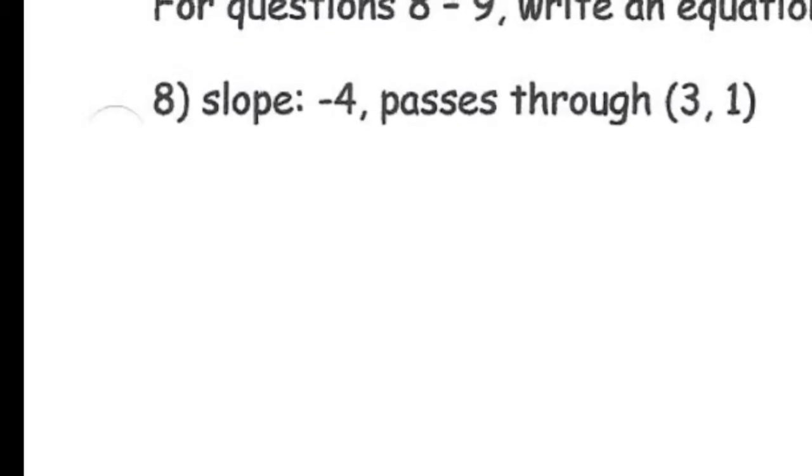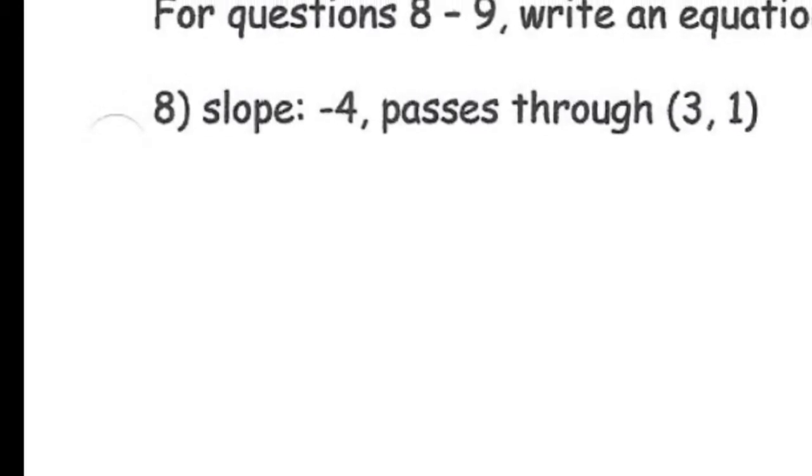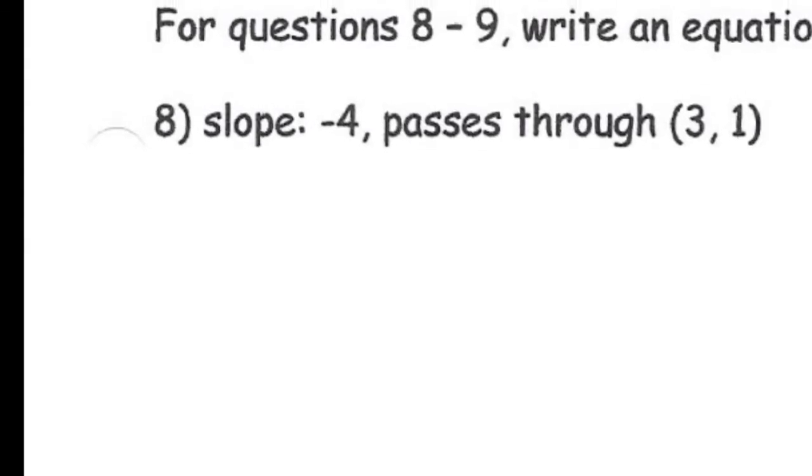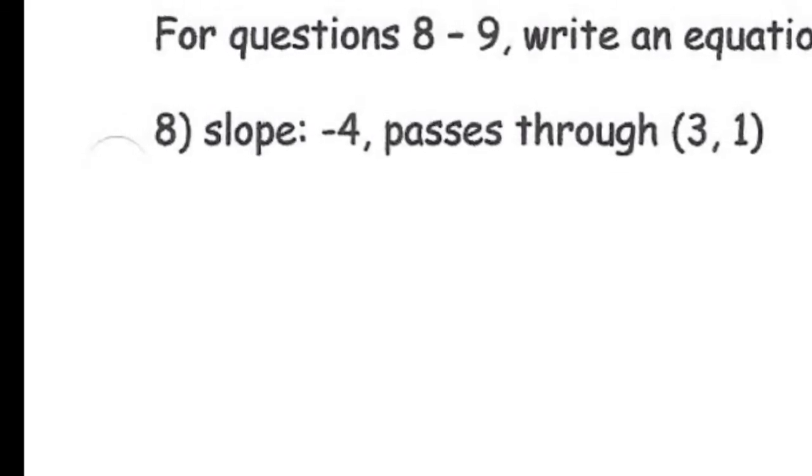Here's an equation for you. If the slope is negative 4 and the ordered pair is 3, 1, what is the point-slope form?